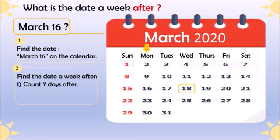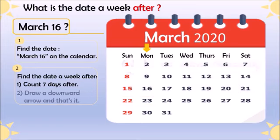The first way is to count 7 days after: 1, 2, 3, 4, 5, 6, and 7 — so it's 23. The second way, which is much easier, is to draw a downward arrow from the date they gave us. From 16 we draw a downward arrow, so the answer is March 23.